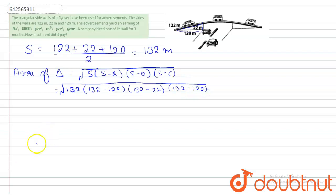Right, this will be equals to 132 multiplied by 10 - 132 minus 122 is 10 - then 110, then 12, right.